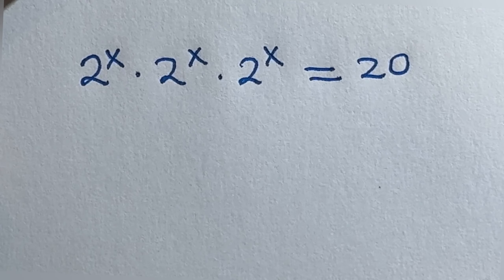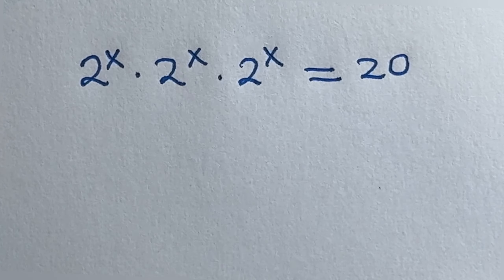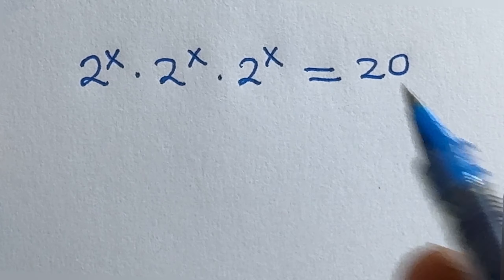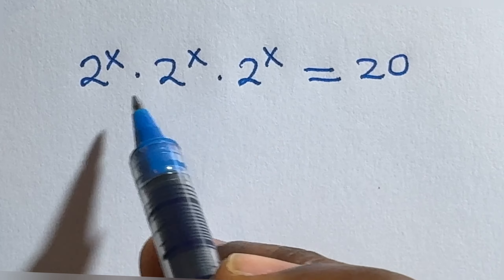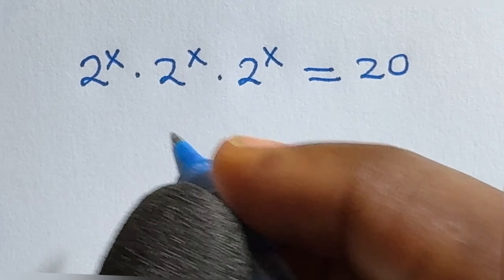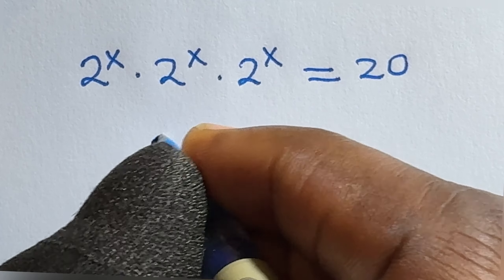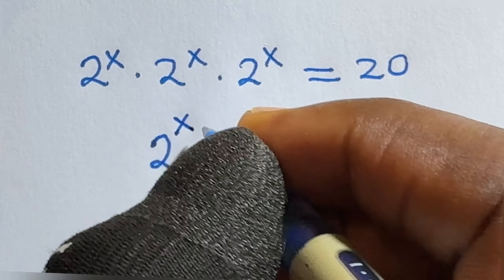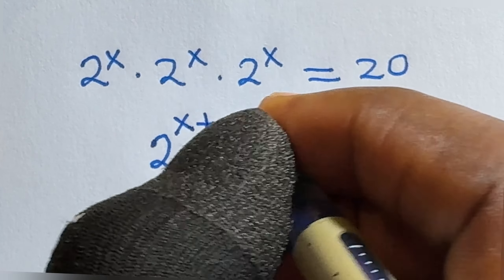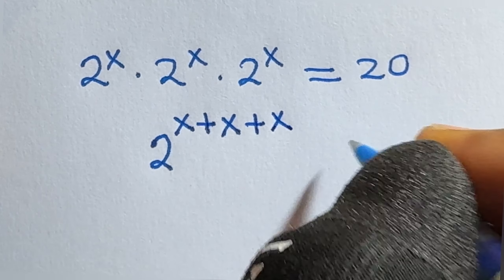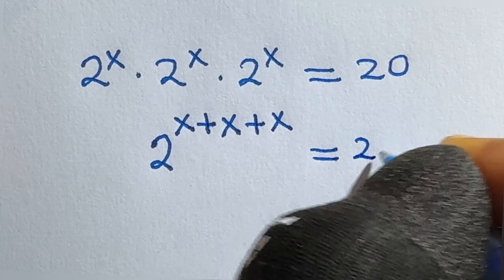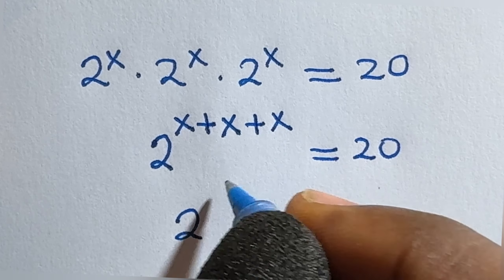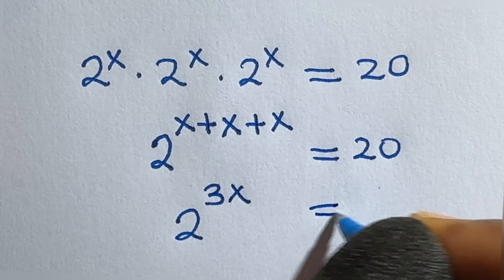Let us solve for x in this problem: 2 to the power of x times 2 to the power of x times 2 to the power of x is equal to 20. Because these are products in the same base, which is 2, we apply the law of indices and add up the powers. So we have 2 raised to power x plus x plus x, which is 3x, is equal to 20.